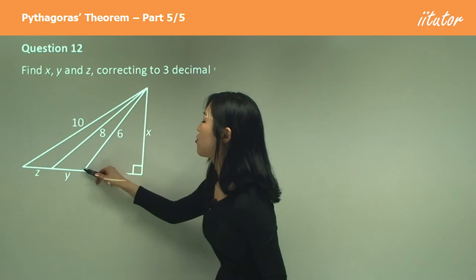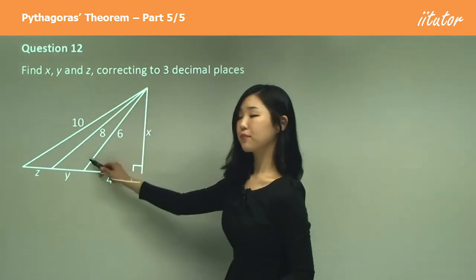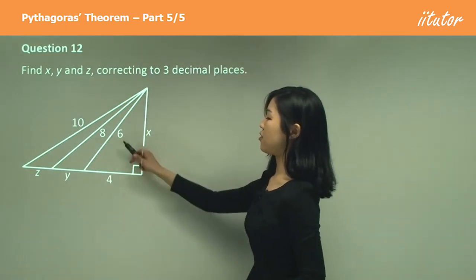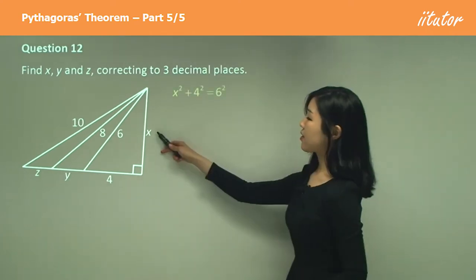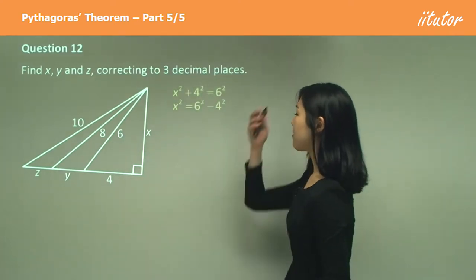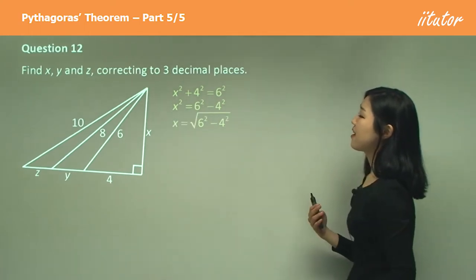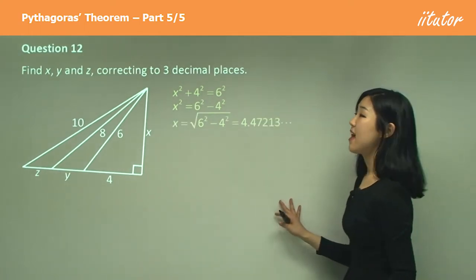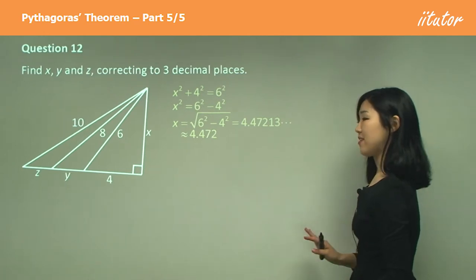I'm gonna start with this little triangle here. Because we can find x by using 6 and 4. x squared plus 4 squared is 6 squared. Move your 4 squared over, square root it, and you should get something like this. And to three decimal places, that's your answer.